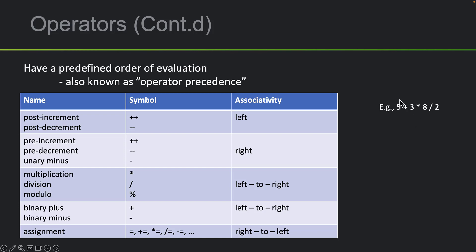Take the expression 5 plus 3 times 8 divided by 2. Using BEDMAS: multiplication and division come first and have equal precedence, so 3 times 8 — which appears first — is evaluated to get 24. The new expression is 5 plus 24 divided by 2. Division has higher precedence than addition, so 24 divided by 2 equals 12. Finally, 5 plus 12 equals 17.